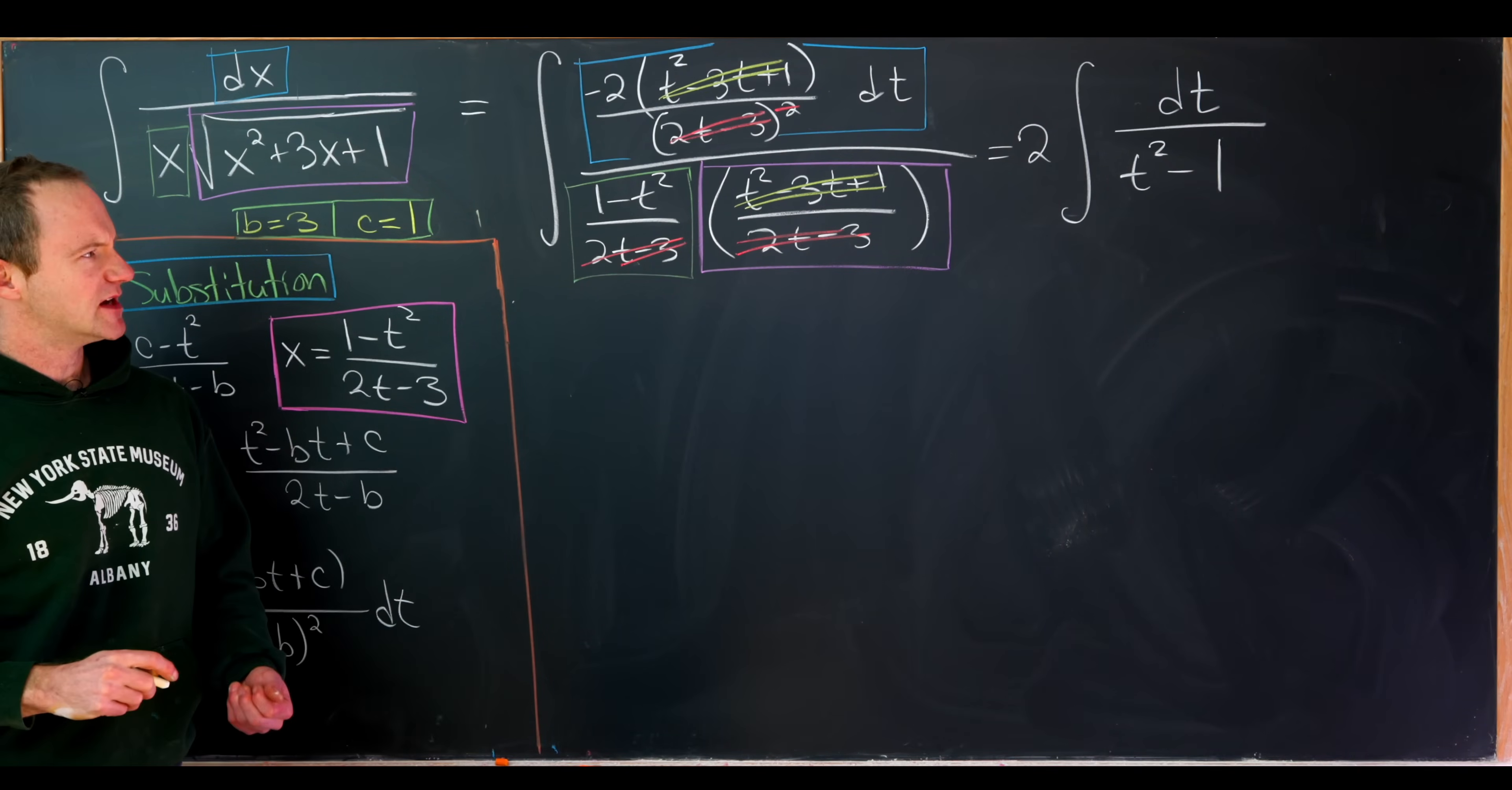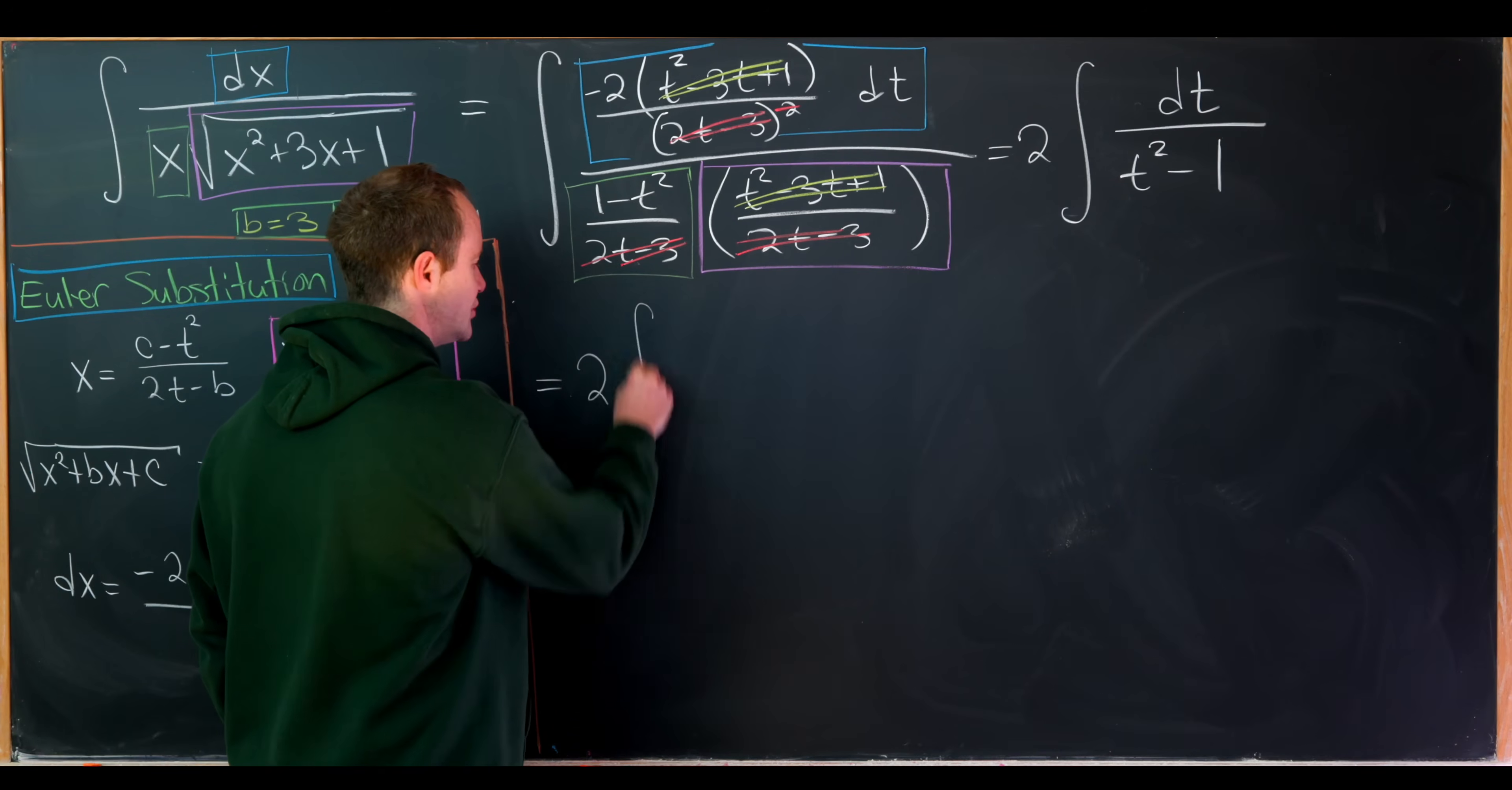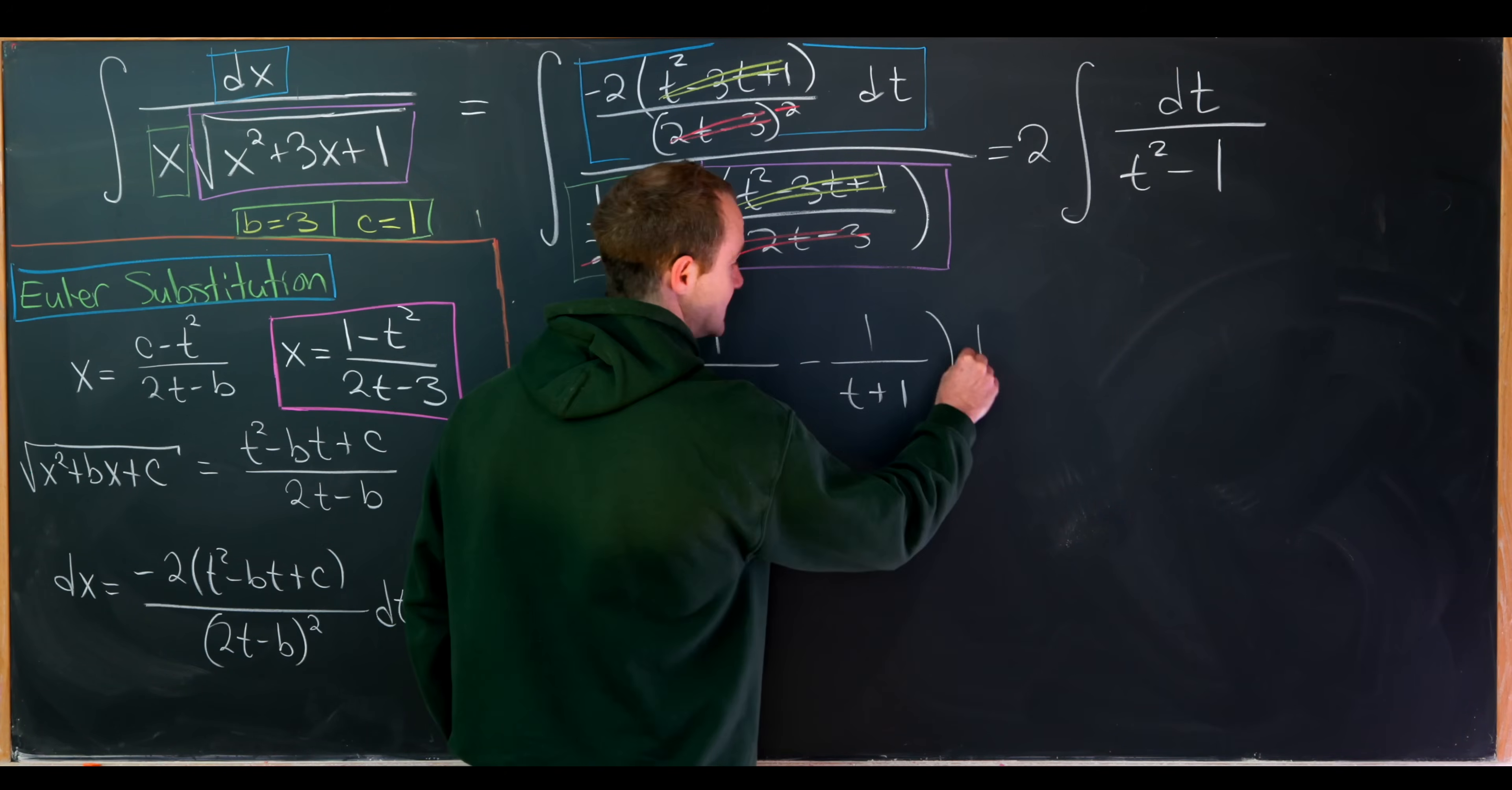But now we can do a standard partial fraction decomposition of that object. So I'll maybe leave that for you. And we'll just jump to that is 2 times the integral of 1 over t minus 1 minus 1 over t plus 1 dt.